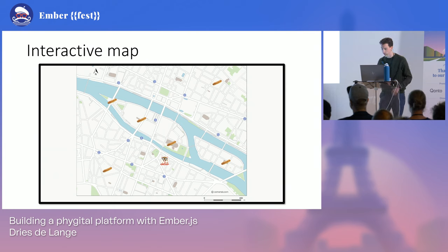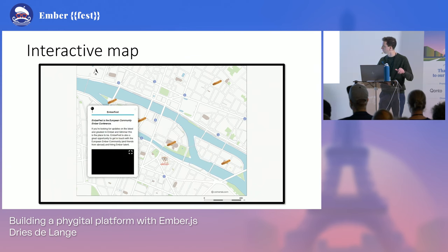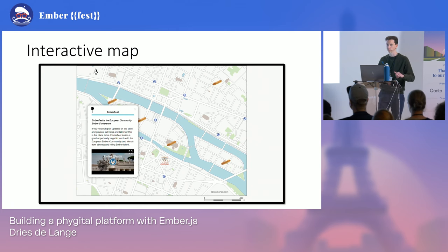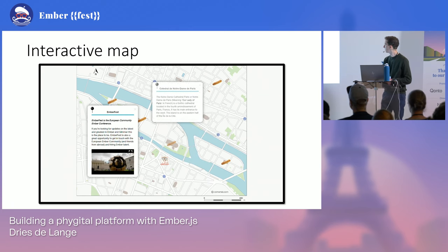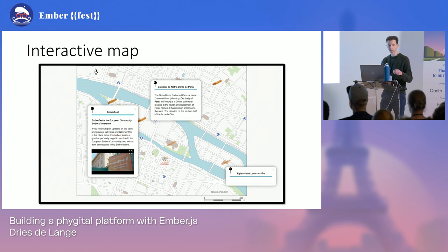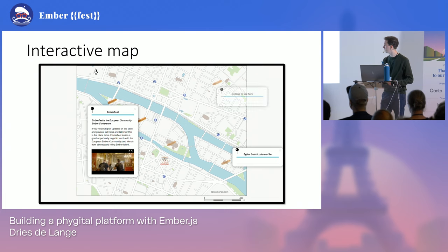An example of what a client can create is an interactive map. I've made one for Emberfest. So this is basically a map with points of interest on it, and interacting with one shows you information, text and videos. Here I made one about Emberfest, and the other little baguettes are just points of interest about the city. This is an application for touch, so you drag and drop the elements.